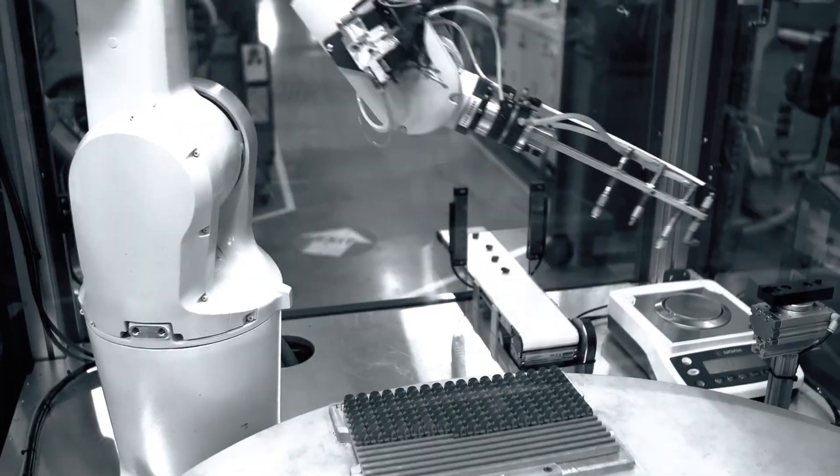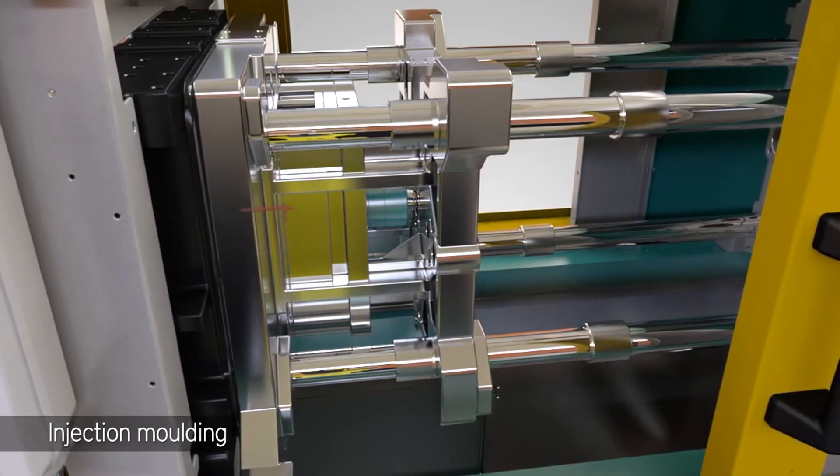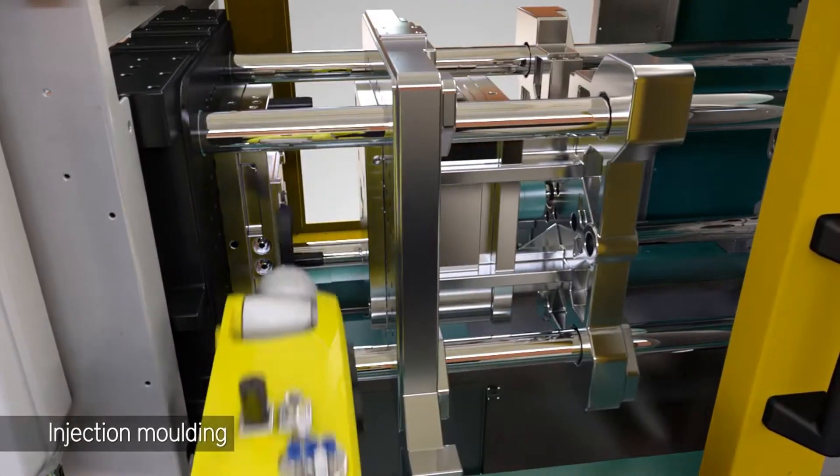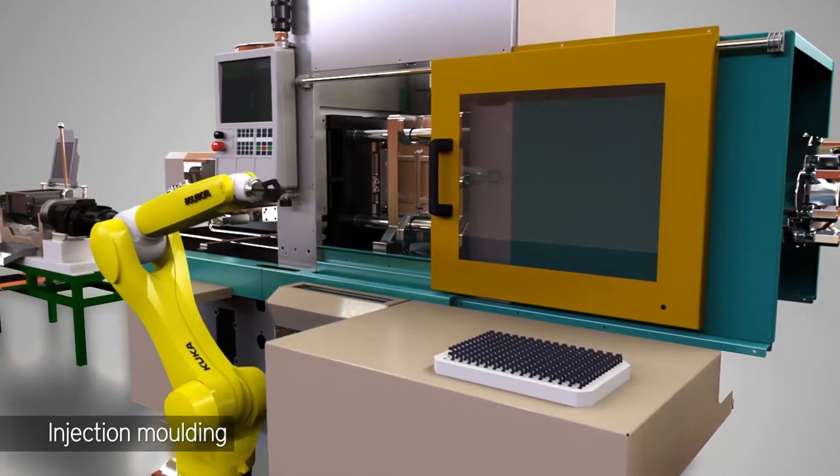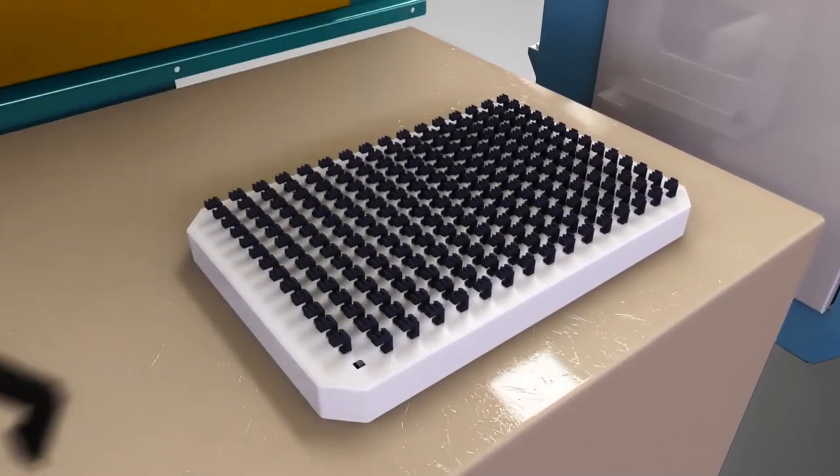Metal injection molding is a net-shaped process that combines the advantages of plastic injection molding and powder metallurgy to produce highly complex metal parts and heavy alloy parts, such as stainless steel, titanium alloy, tungsten alloy, etc.